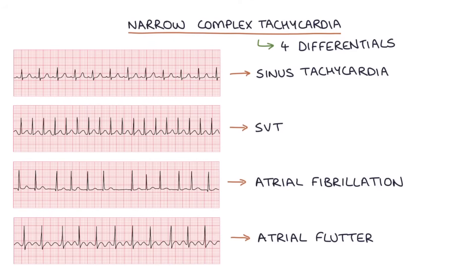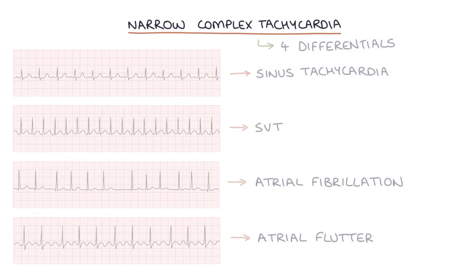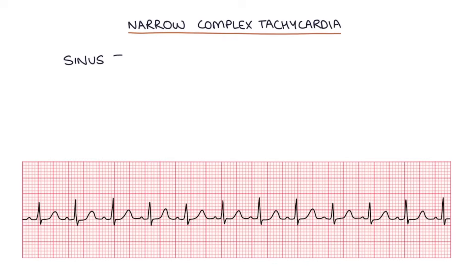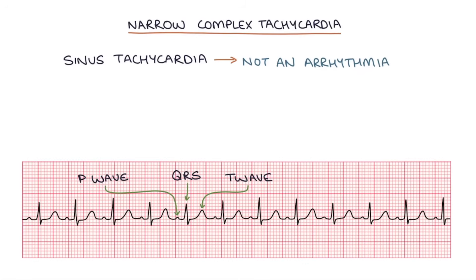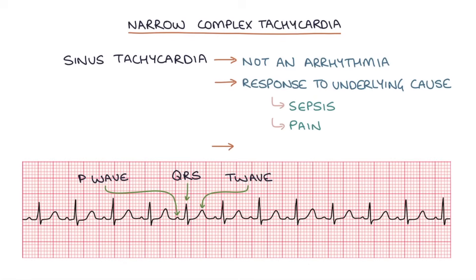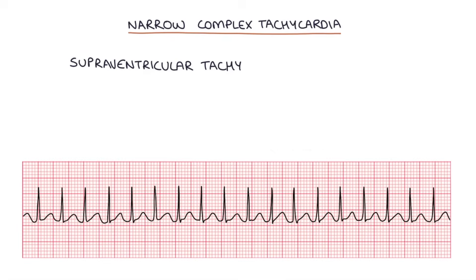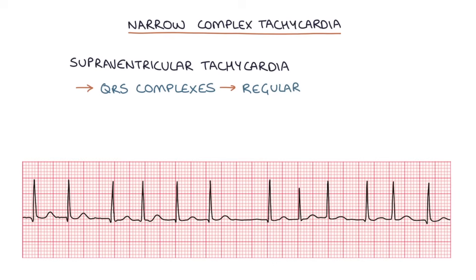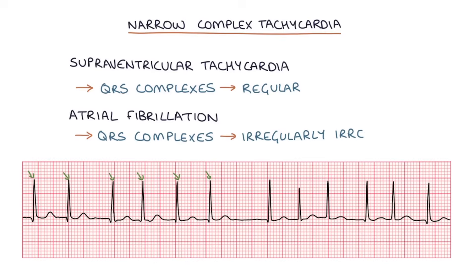There are key features that help you differentiate between these diagnoses. Sinus tachycardia will have the normal P wave, QRS, and T wave pattern on ECG — it's not an arrhythmia and is usually a response to an underlying cause such as sepsis or pain, so the mainstay of management is treating that cause. In supraventricular tachycardia the QRS complexes are regular, which helps differentiate it from atrial fibrillation where the QRS complexes will be irregularly irregular.